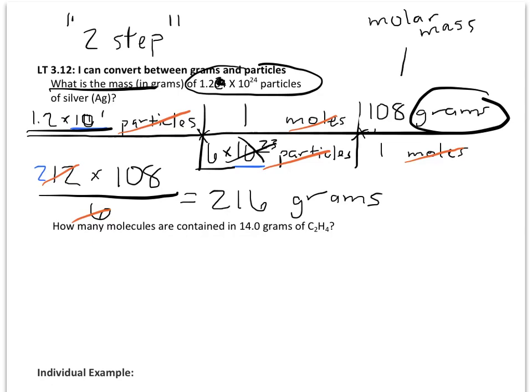So again, we take our known value and we put that first. Next, we're going to use Avogadro's number to multiply the known value times this conversion factor of 1 mole over 6 times 10 to the 23rd particles. And then we're going to multiply by the molar mass to convert this to grams.